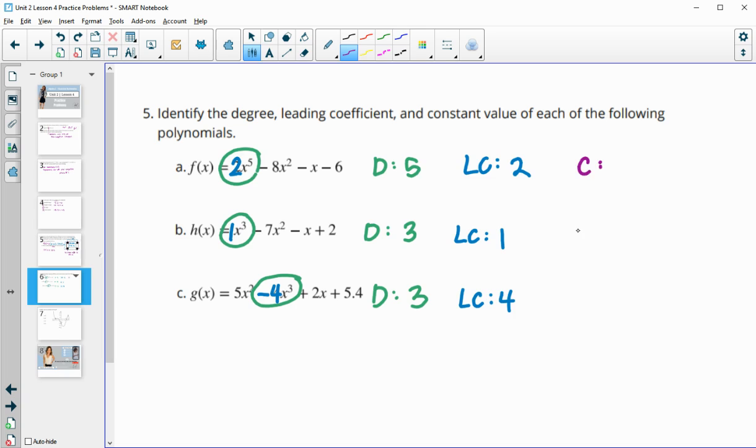Then the constant is the term that has no variables with it, so no x's with it. In this case, it's -6. In this one, it's 2. And in this one, it's 5.4.